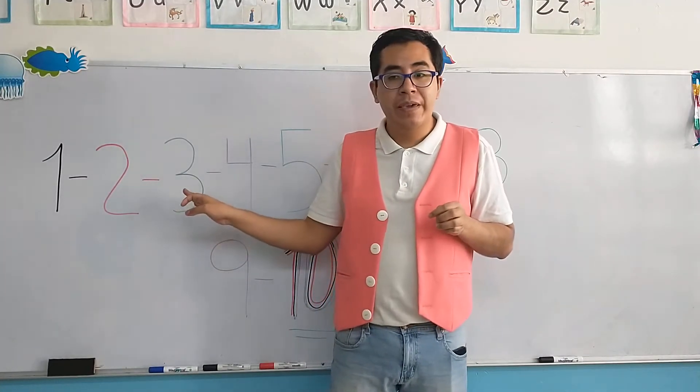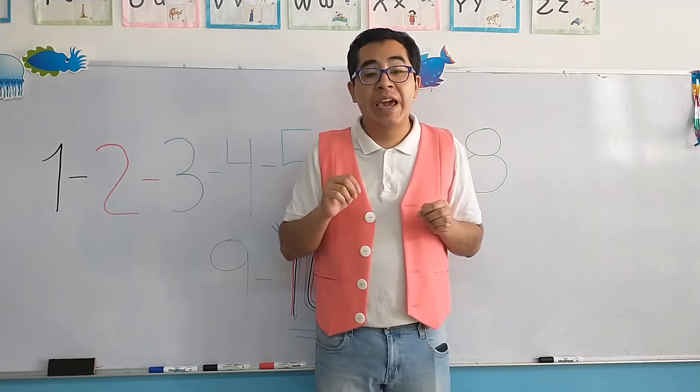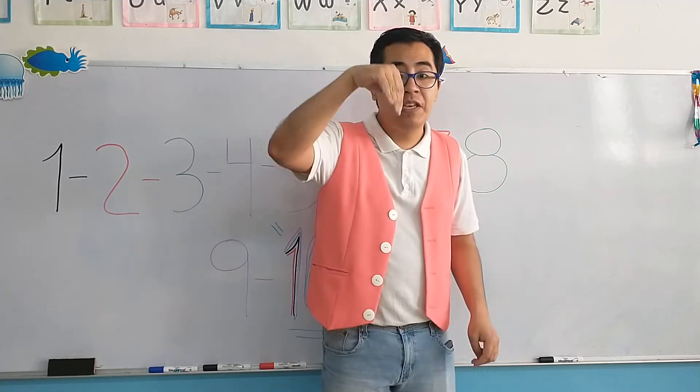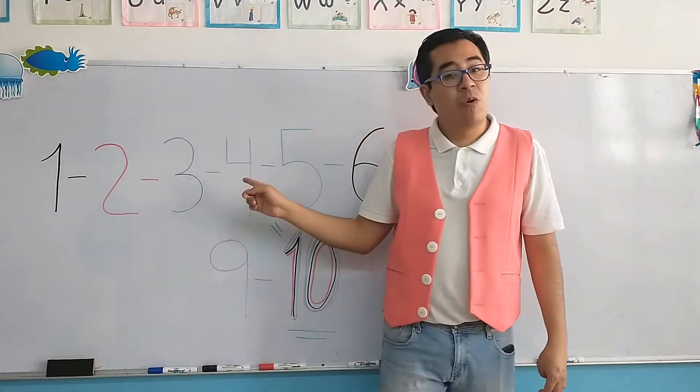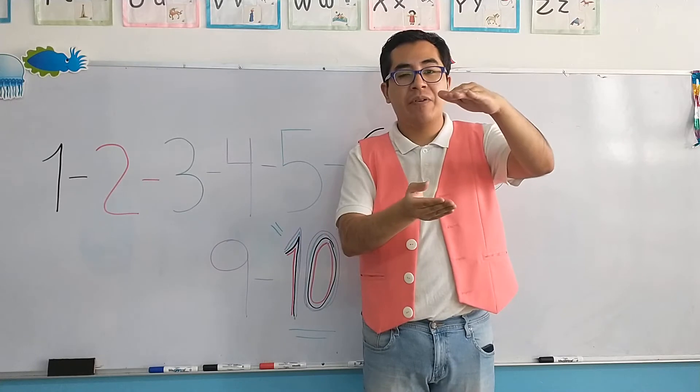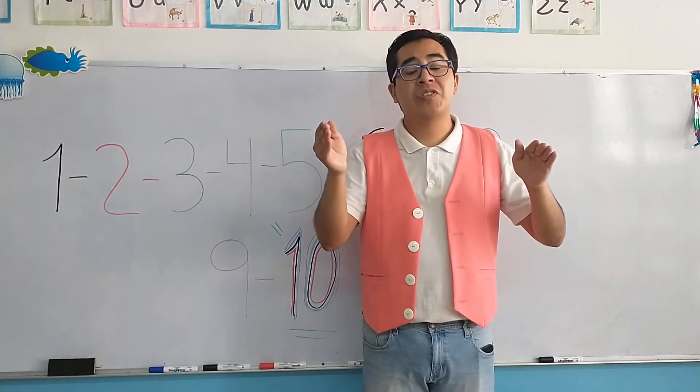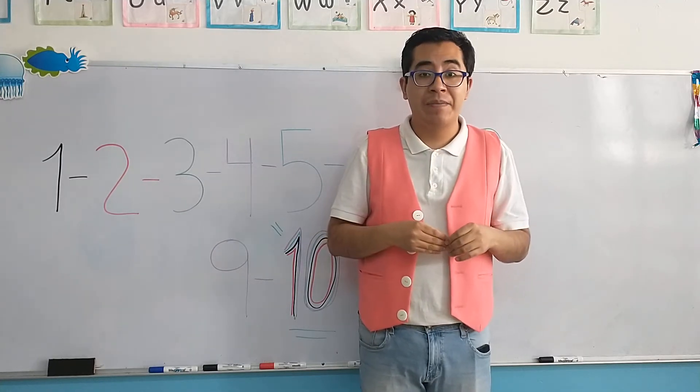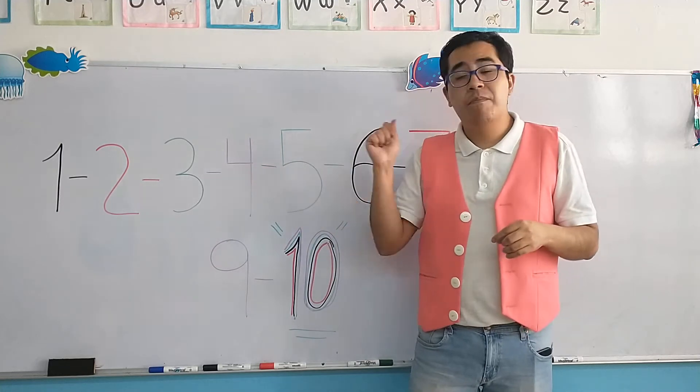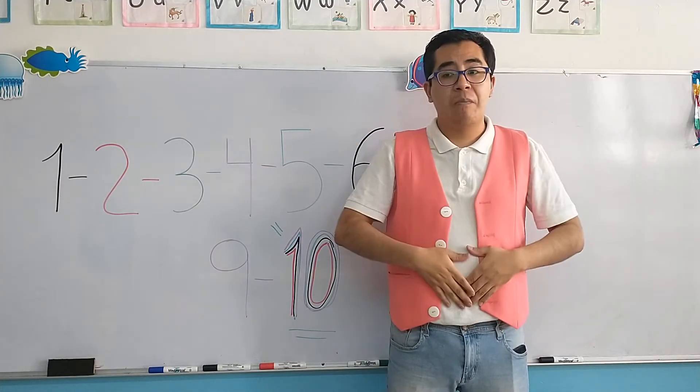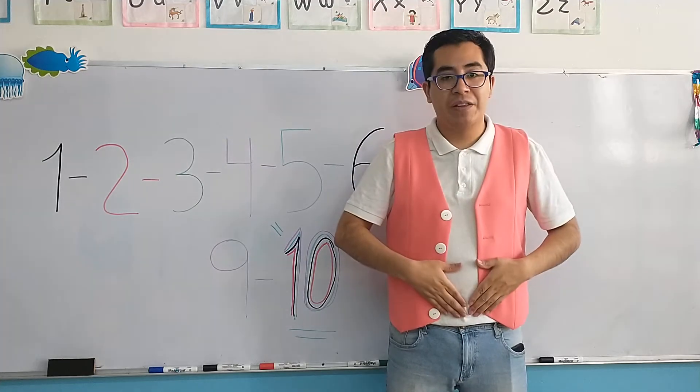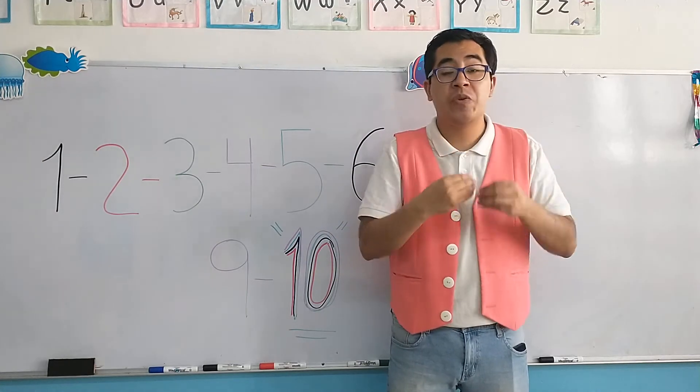The number three is the snake, the animal of the zoo. The number four, the chair, upside down. Remember, the chair in Spanish, una silla, al revés. The number five, the number with the huge stomach, with the huge belly, because he loves to eat.